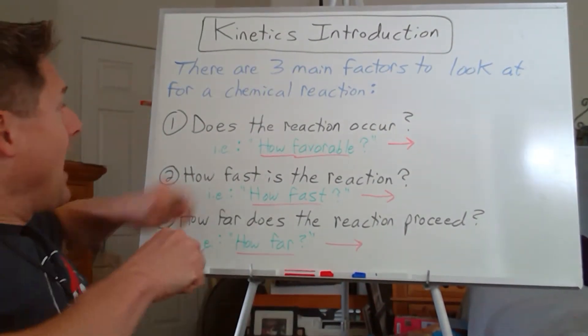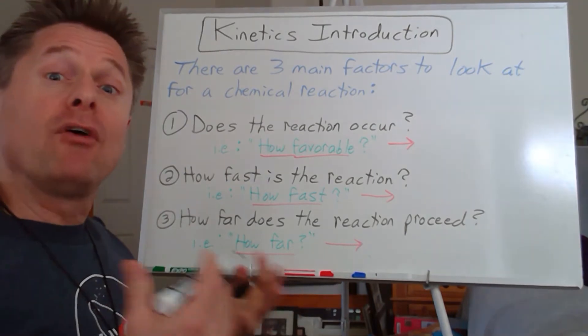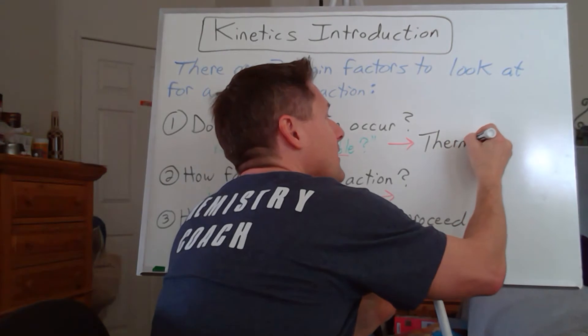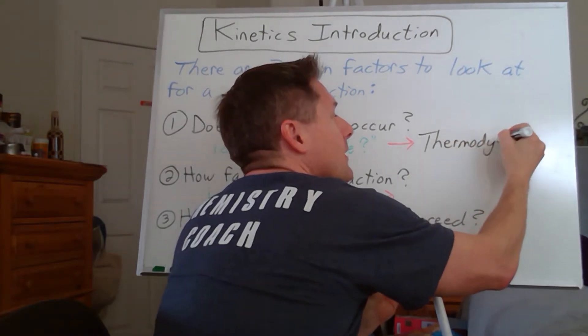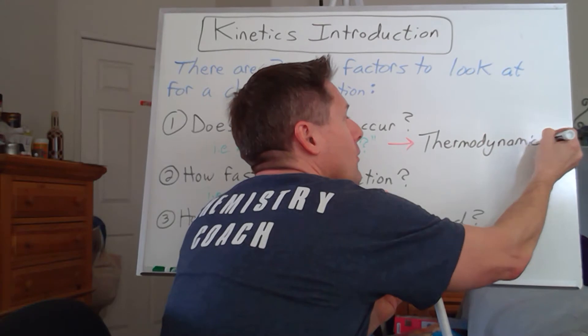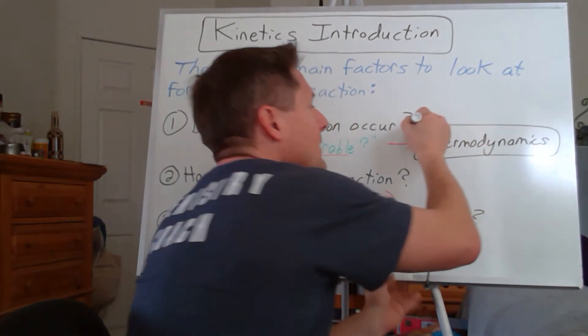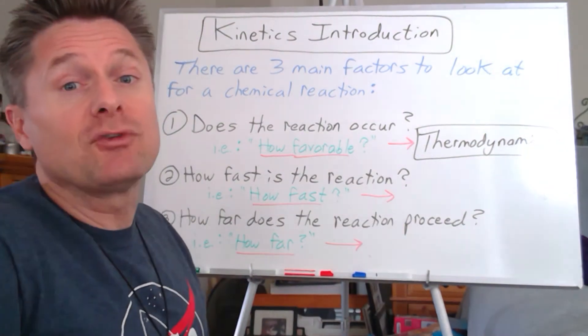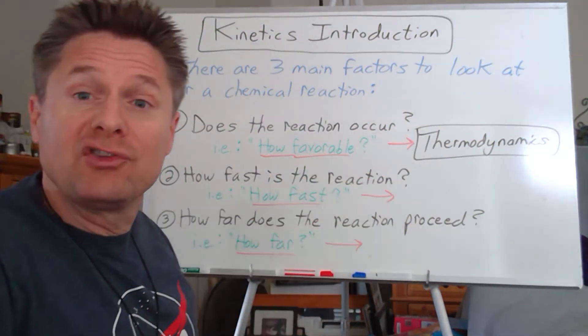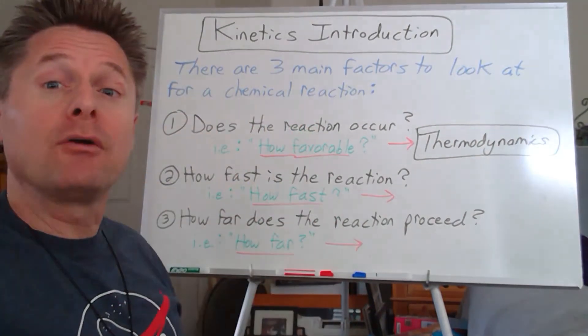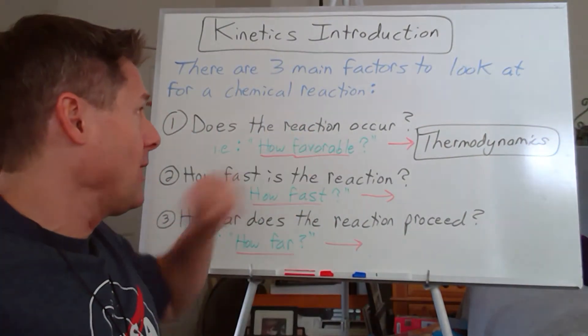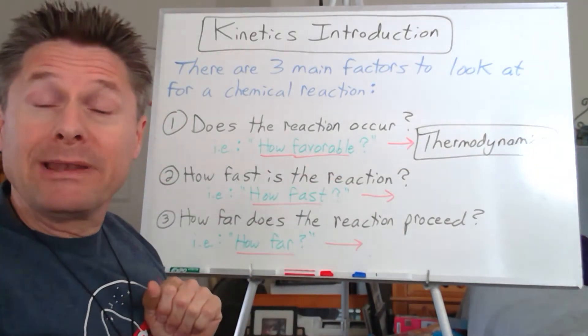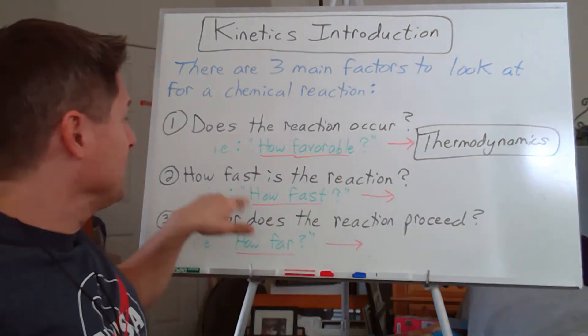These have names we're going to use for the branches of chemistry. How favorable is a reaction falls under the branch of thermodynamics. You very likely in introductory chemistry or first semester general chemistry looked at thermochemistry, which is a small portion of this underlying umbrella called thermodynamics. So if we want to answer the question 'does the reaction occur' or 'how favorable is it,' thermodynamics is going to answer that question.